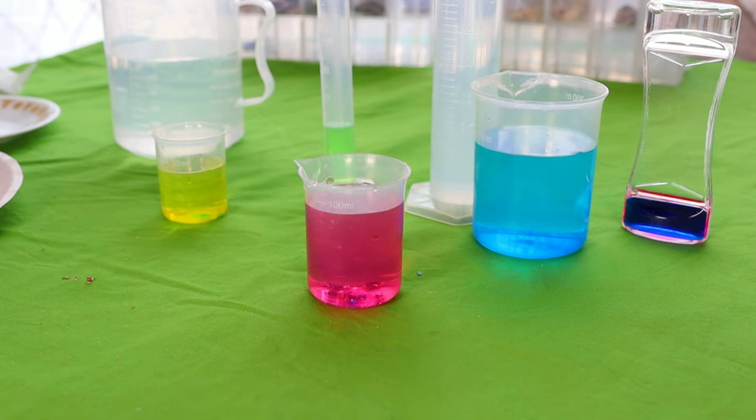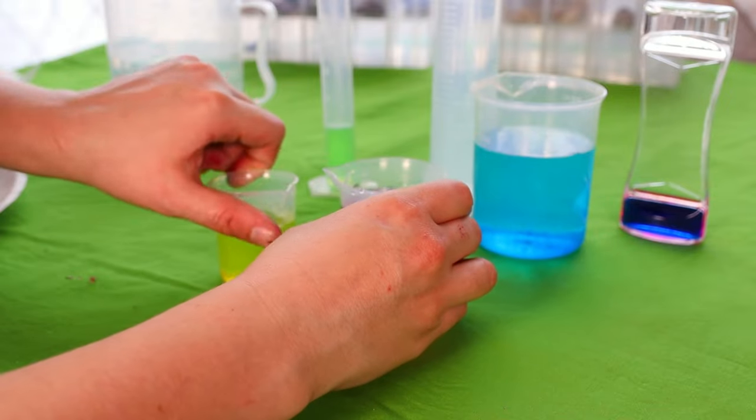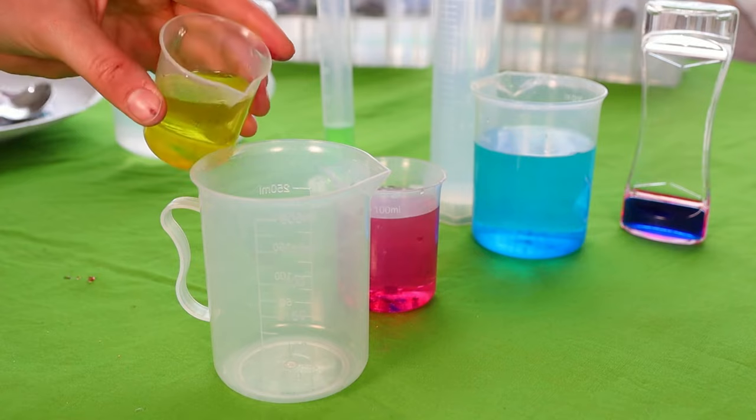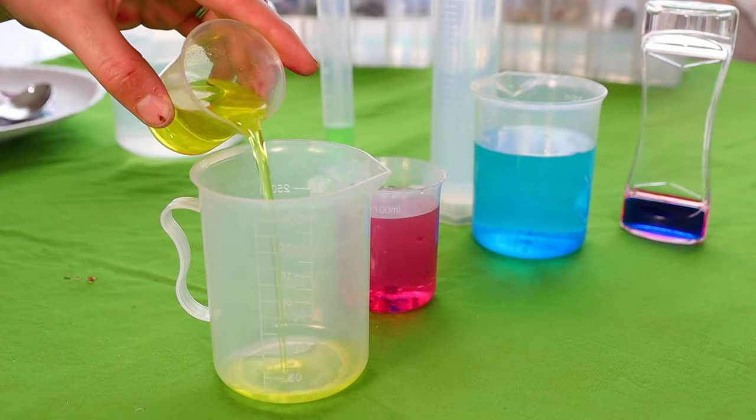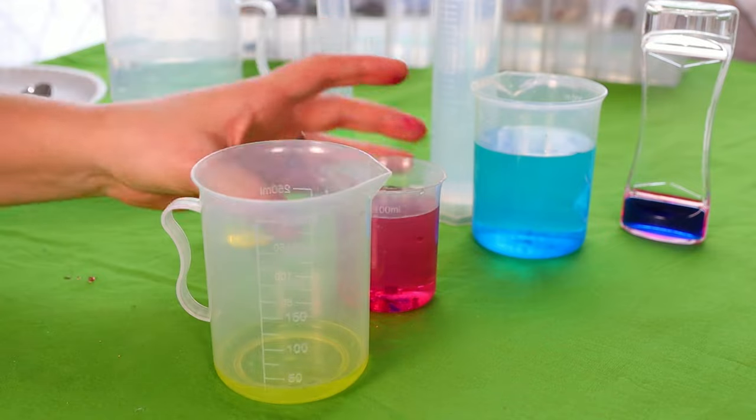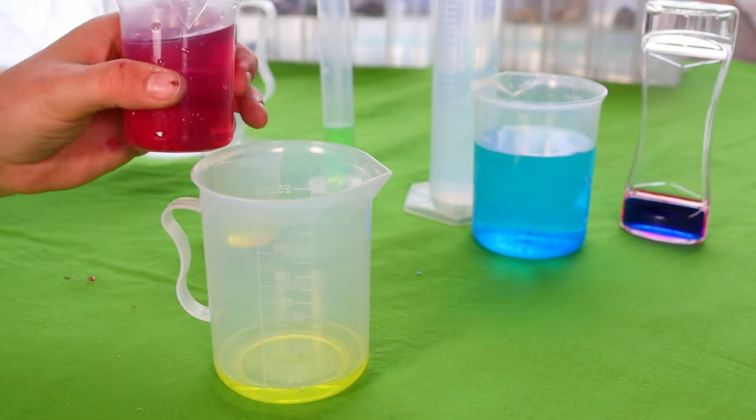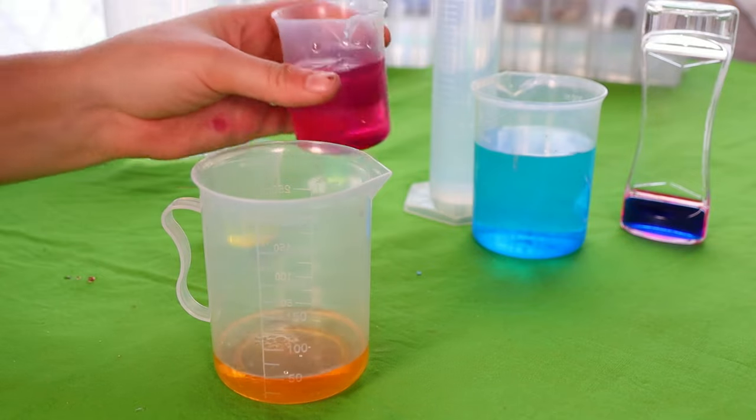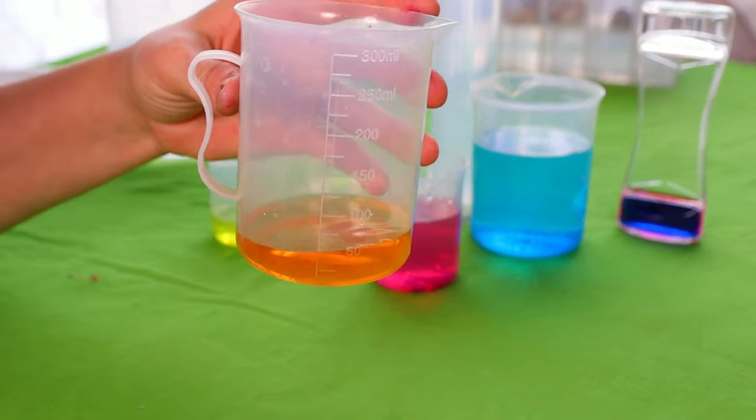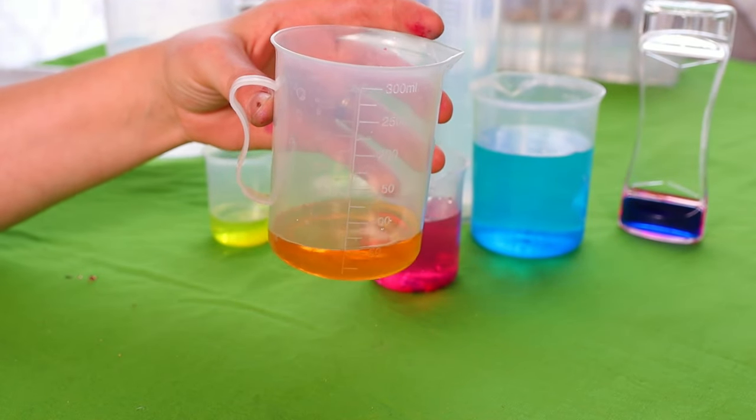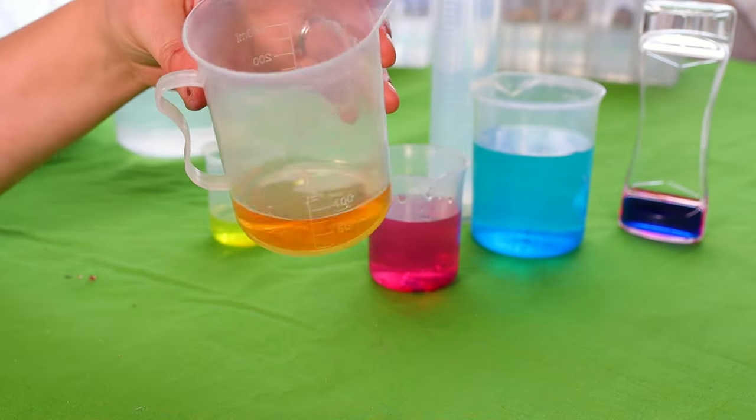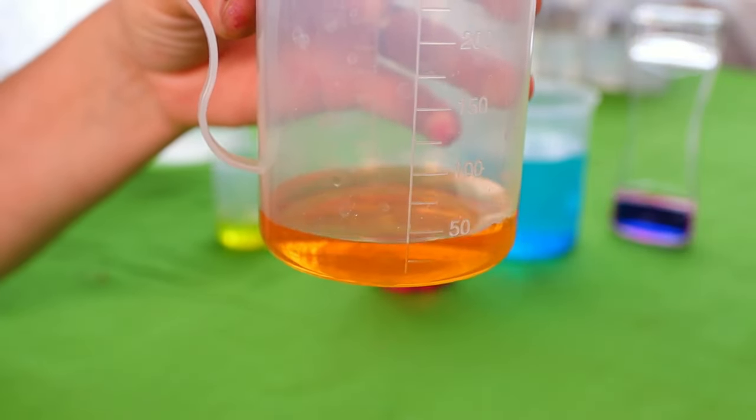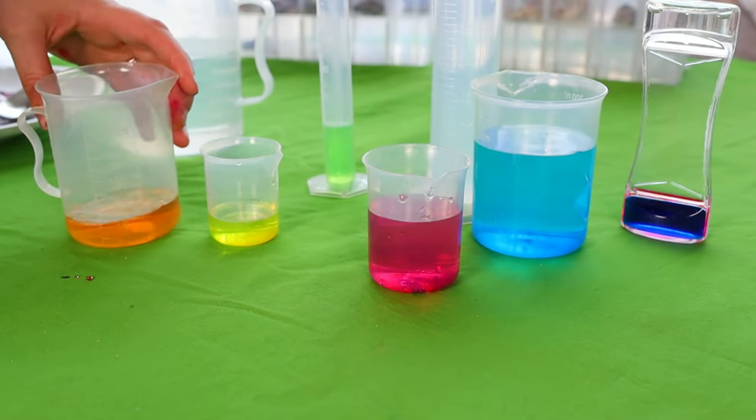Are you ready to do some more mixing? Let's see what red and yellow make. Here we go. We're going to put in some of our yellow and some of our red. It's like magic! What color is that? It's the color orange. Whoa! Here take a closer look. We made a whole new color. This is so much fun!